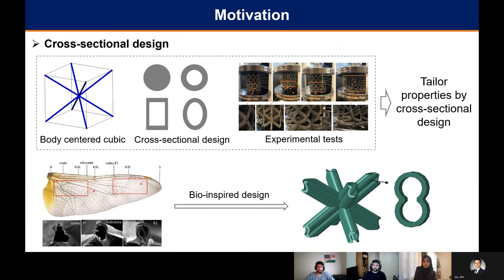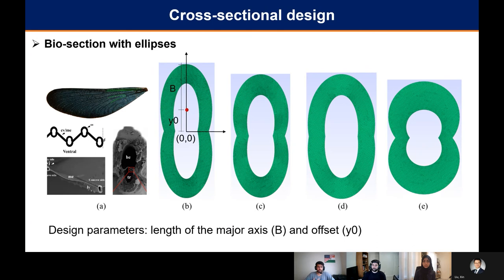This time we tried a cross-sectional design inspired by a dragonfly wing stem cross-section. The idea was to bring two ellipticals together and remove the overlapping part. To do that we used two major design parameters: the length of the major axis b, and the offset y0. Y0 is the center distance between the two ellipticals — reducing y0 transitions the shape as seen from chart b to c to d, while changing the major axis length edits the size of the elliptical itself, as seen between chart b and chart e. On the left you can see how our cross-sectional design relates more closely to the dragonfly wing stem cross-section.